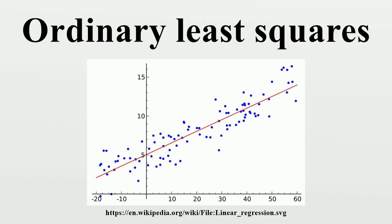Spherical errors: Var(epsilon | X) equals sigma squared times I_n, where I_n is an n times n identity matrix, and sigma squared is a parameter which determines the variance of each observation. This sigma squared is considered a nuisance parameter in the model, although usually it is also estimated. If this assumption is violated then the OLS estimates are still valid, but no longer efficient. It is customary to split this assumption into two parts.